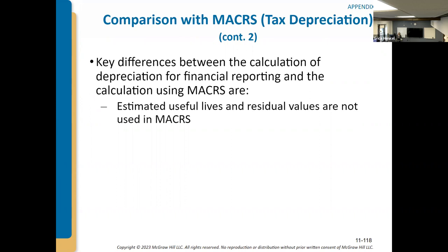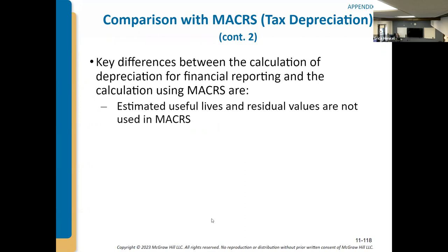Under MACRS: furniture and fixtures are 5-year assets, trucks and machinery are typically 7-year assets, and computers and electronics are typically 3-year assets — regardless of how long you plan to use them. MACRS is more rigid than financial reporting depreciation because the tax code doesn't want you voluntarily putting shorter lives on assets just to write your income down to zero and pay no taxes.